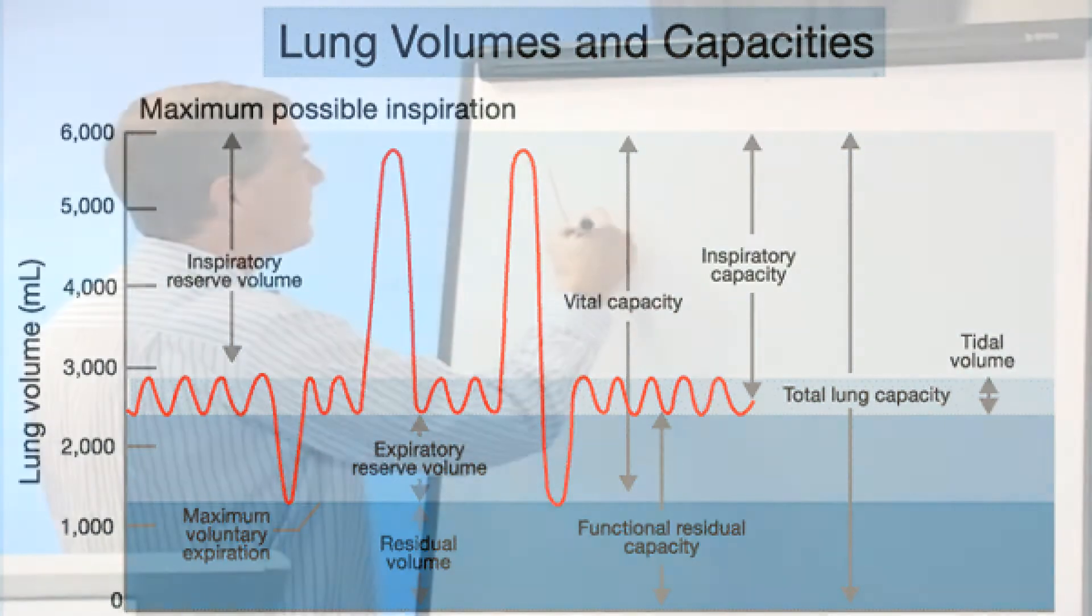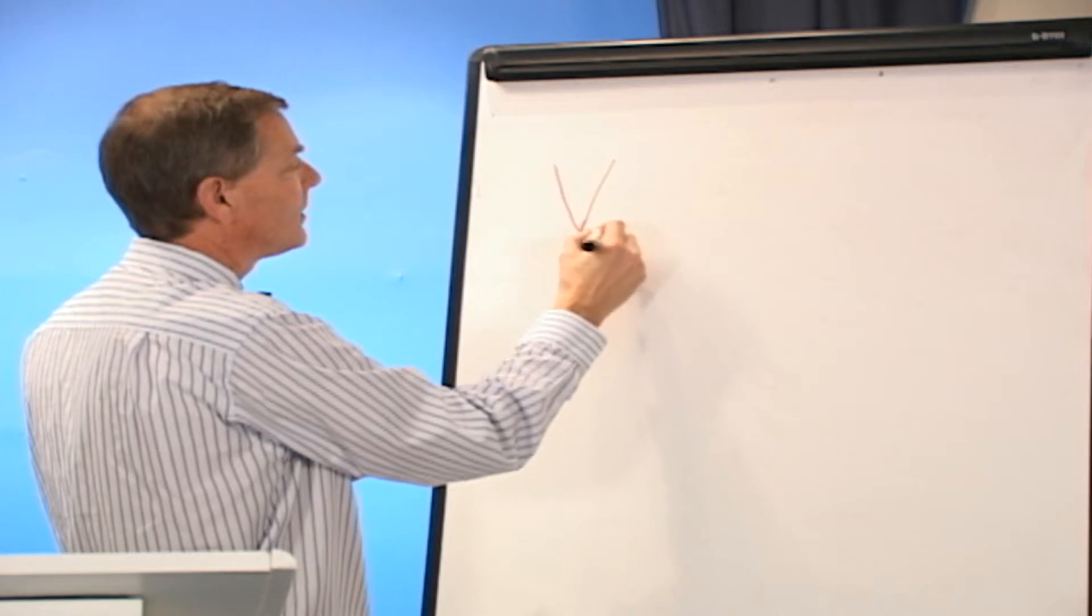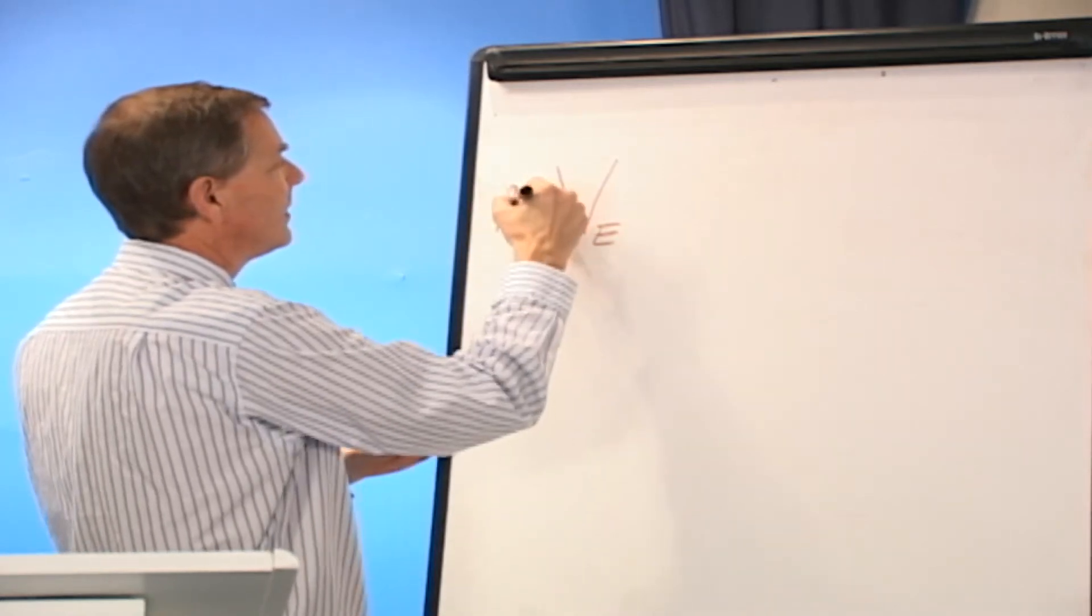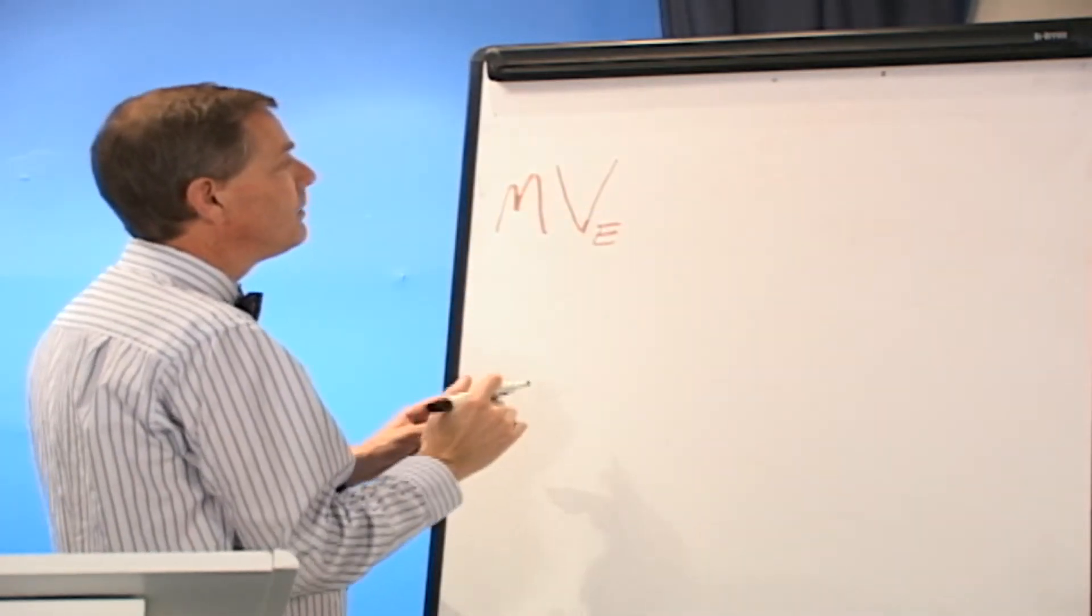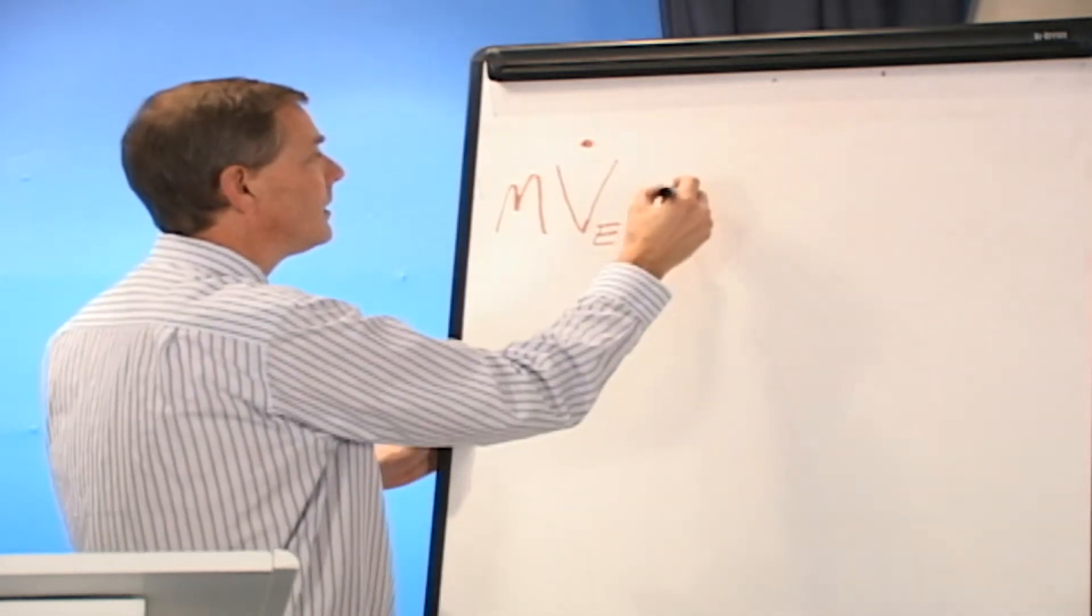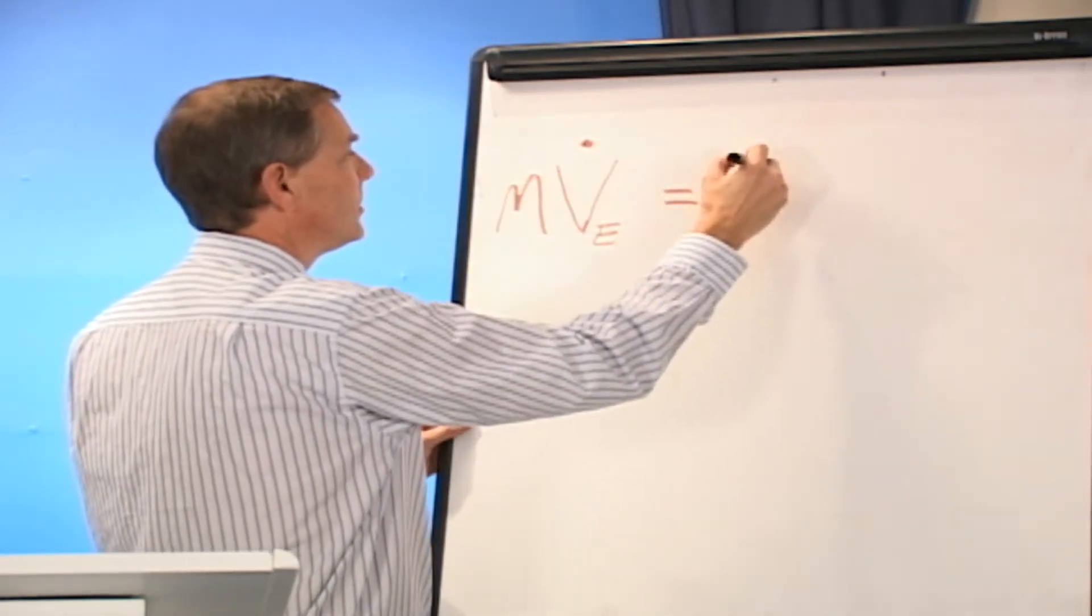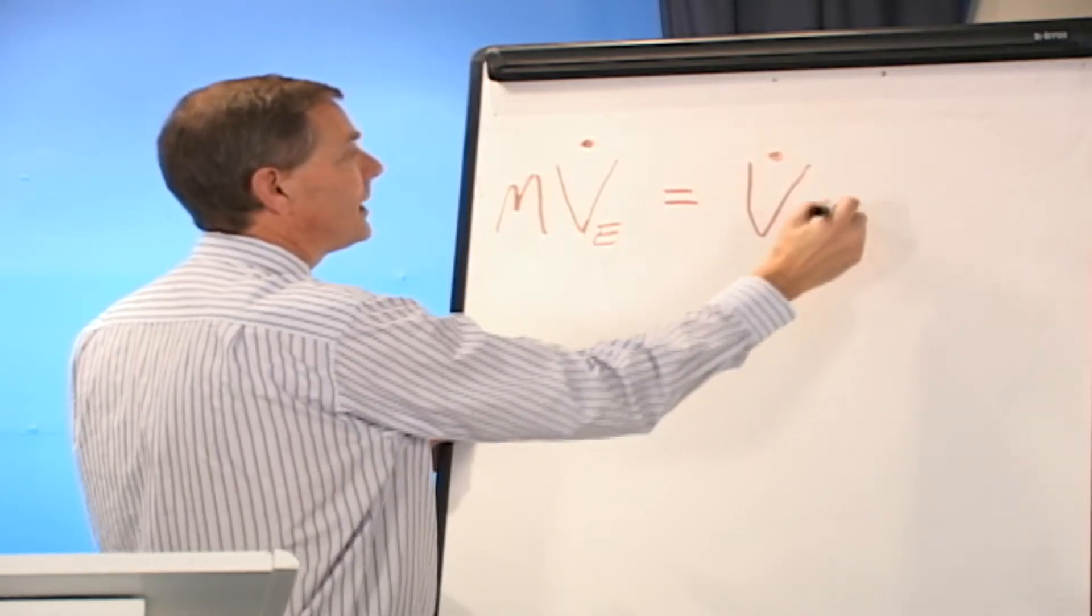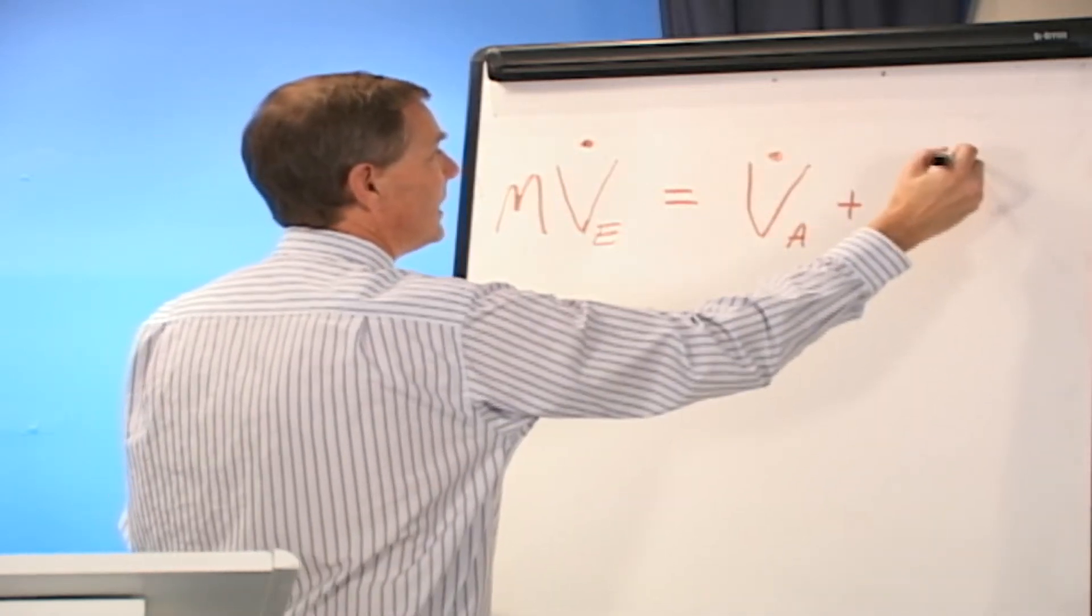So we talk about ventilation, expired ventilation, and we can say it's minute ventilation if you will. Minute ventilation is going to be the sum of the alveolar ventilation liters per minute plus the dead space ventilation.